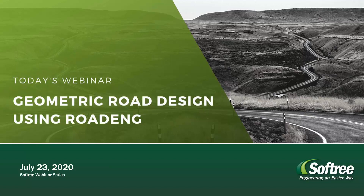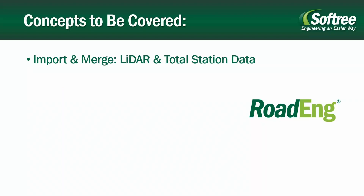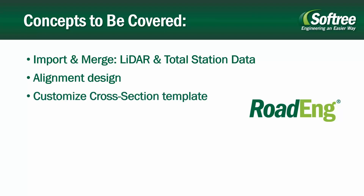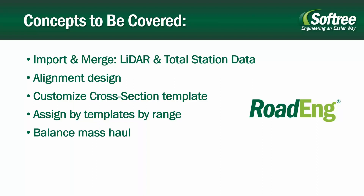Even if you are an experienced Road Eng user it's still totally applicable. We're going to demonstrate how to set up a terrain model. We'll be working with both LiDAR data and total station data, showing you how to import those two different data types and merge them together. We'll throw in a background ortho photo as well, then tackle alignment design — setting up horizontal and vertical alignments, customizing cross-section templates, assigning templates to different ranges, balancing our mass haul, and creating an output sheet we call multi-plot.